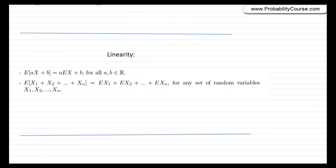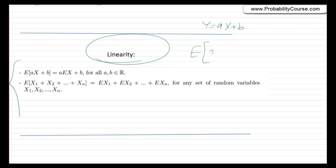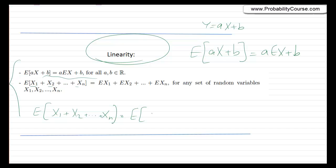We also talked about linearity of expectation before, and of course it's true here for continuous random variables as well. Basically, if I have a random variable X and define a new random variable Y = aX + b, then the expected value of Y equals a · E[X] + b. And if I have a bunch of random variables X₁, X₂, X₃, and so on, then E[X₁ + X₂ + … + Xₙ] = E[X₁] + E[X₂] + … and so on.